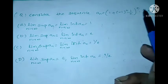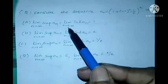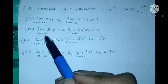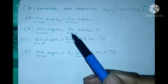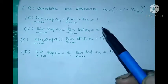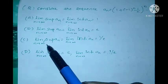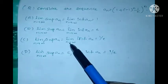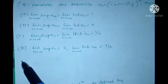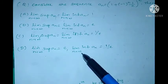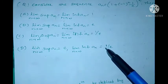Find the limit supremum and limit infimum as n tends to infinity. Option A: lim sup of a_n = lim inf of a_n = 1. Option B: lim sup of a_n = e. Option C: lim sup of a_n = 1/e. Option D: lim sup of a_n = e and lim inf of a_n = 1/e.